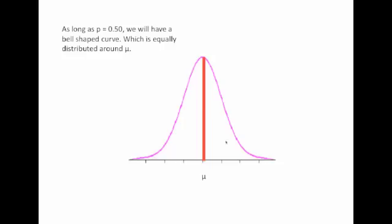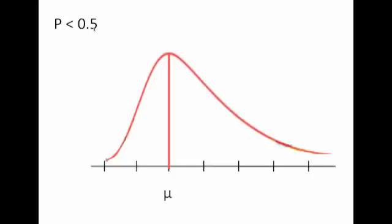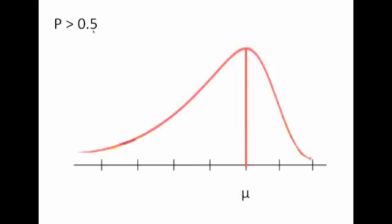As long as p is equal to 50%, what we wind up with looks very much like a normal distribution, equally distributed around mu. But if p is less than 0.5, that will move mu back down to the left, and you'll have a curve which is shifted to the left. If p is greater than 0.5, then it will move mu out to the right, which will make your curve shift to the right.